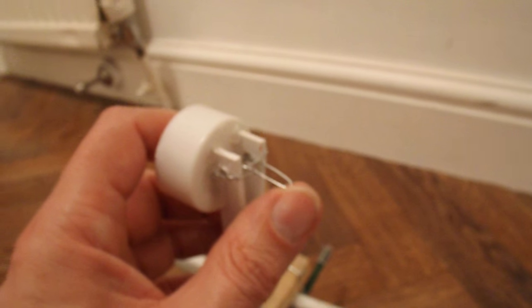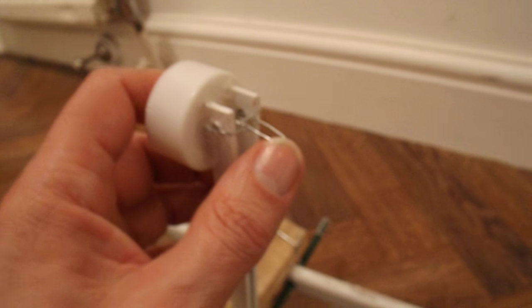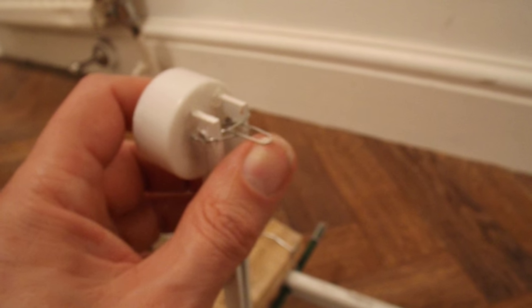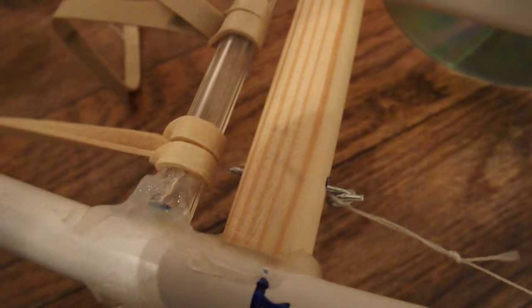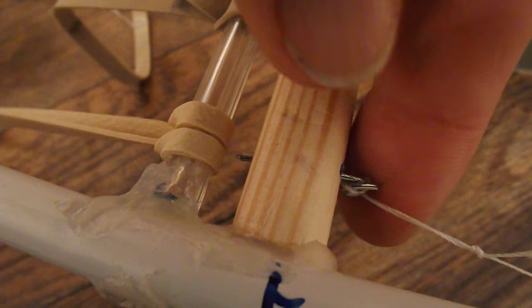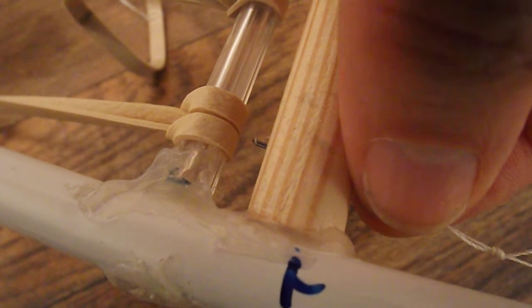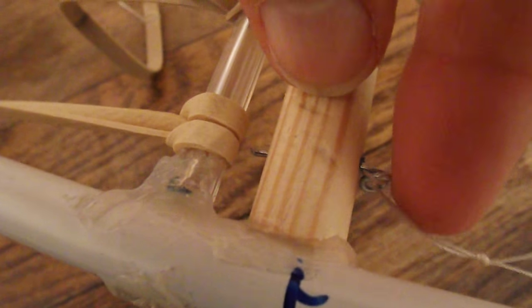So this is the plastic cap that holds the foam, the cube of foam. On the back we've got this bent paper clip. And that loop is held in place by that peg.